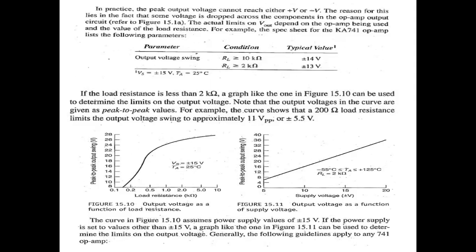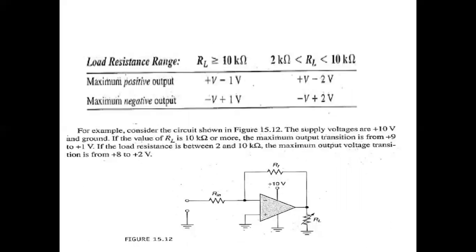This is the basic function of output voltage swing with reference to load resistance. The condition we have discussed here is applicable to any 741 operational amplifier. We have noted that if load resistance is greater than 10kΩ, then we have maximum output voltage. We have summarized that here: load resistance greater than or equal to 10kΩ gives maximum output voltage.